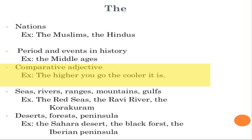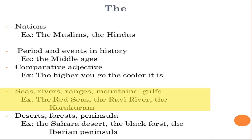Rule number nine: seas and rivers. We use 'the' with seas — the Red Sea, the Mediterranean Sea. Rivers also take 'the' — the Indus river, the Sutlej river, the Beas river. Mountain ranges also take 'the' — the Karakoram range, the Hindu Kush.